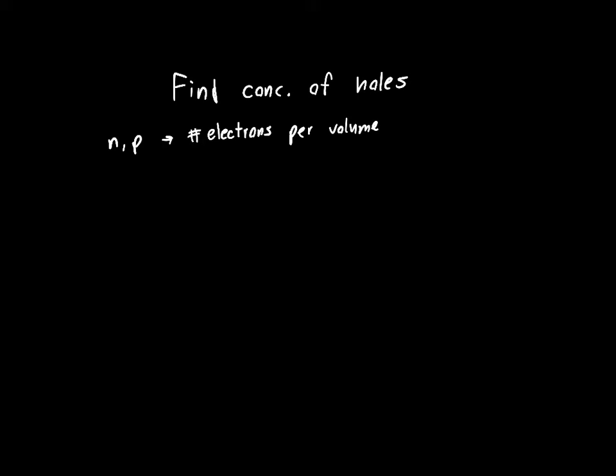In this video we're going to find the concentration of holes. It's basically identical to finding the concentration of electrons—you just integrate the density of states function, except this time it's in the valence band, multiplied by the probability of finding a hole fp(E), times dE.